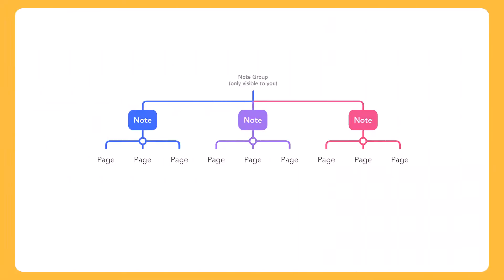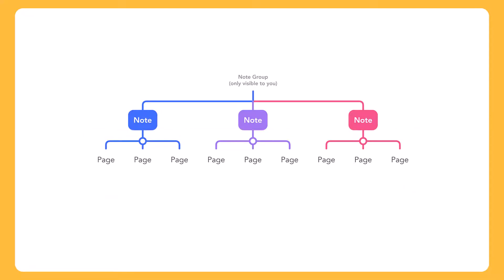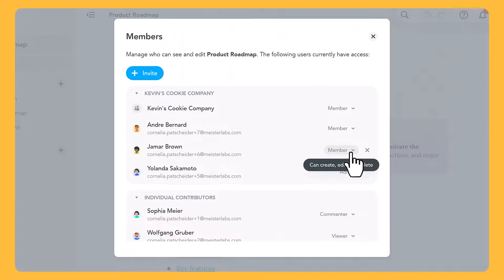Administrators have full control over notes and pages. Members can change the name of a note but cannot change any user permissions, add new members, delete, or archive the note — though members have full control over all pages within a note. If you're not sure which role to assign, choose this one: it's a great starting point and you can always change the role if need be.